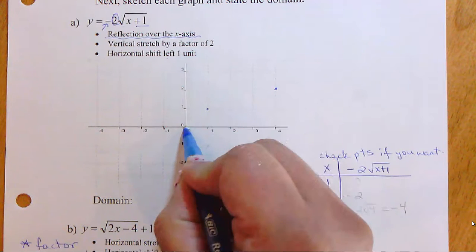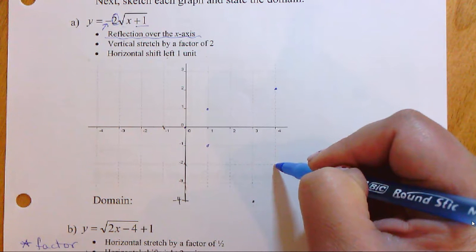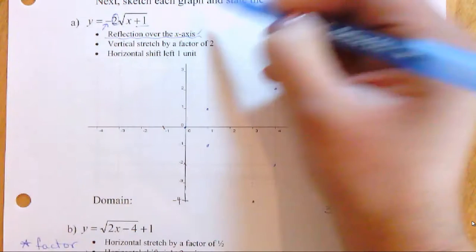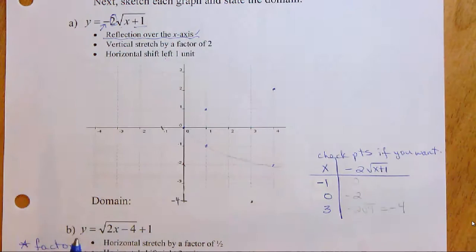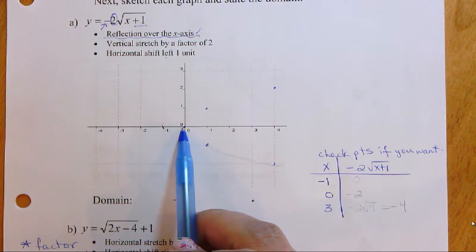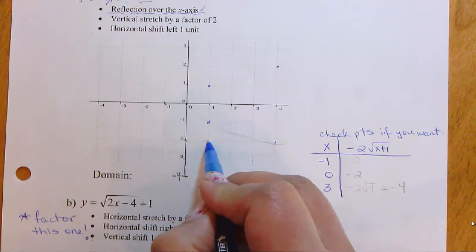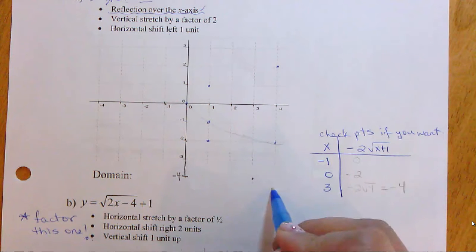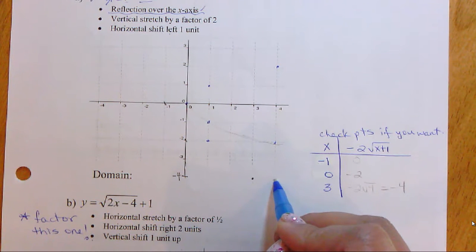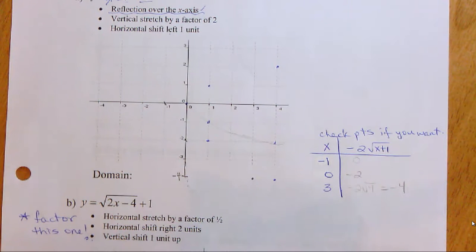Our parent function has points at (0,0), (1,1), and (4,2). Reflecting over the x-axis: the origin stays, (1,1) moves to (1,−1), and (4,2) moves to (4,−2). Then applying the vertical stretch by two: all y values are multiplied by two — so (1,−1) becomes (1,−2), and (4,−2) becomes (4,−4), which goes off the graph, so extend the axis to accommodate.